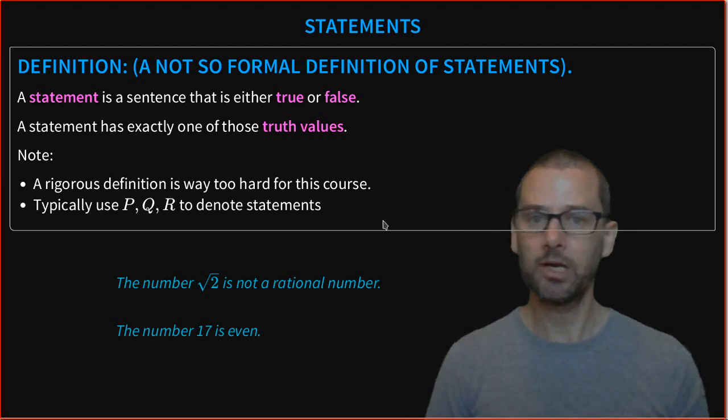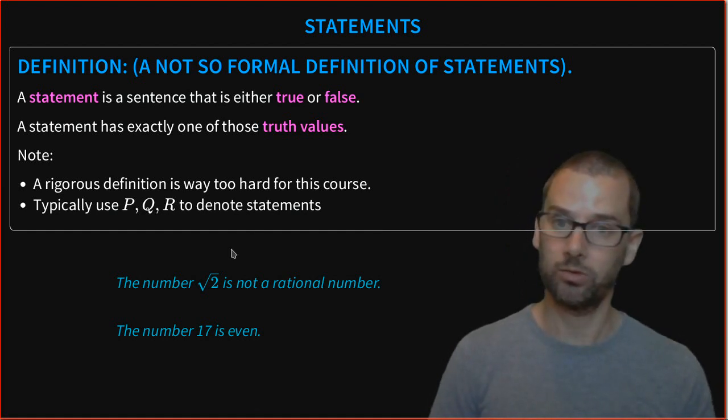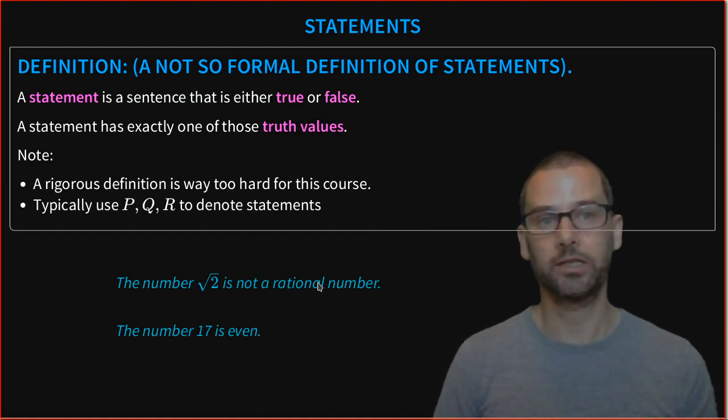Here's a couple of examples. The number square root of two is not a rational number. This is something we'll actually prove to be true in this course. So this is a statement. It's either true or it's false, and in this case, it's actually true.